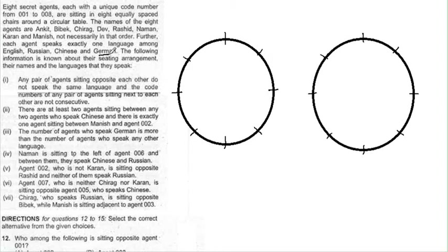The first condition says: any pair of agents sitting opposite each other do not speak the same language, and the code numbers of any pair of agents sitting next to each other are not consecutive. This is a very important point — their code numbers will not be consecutive.